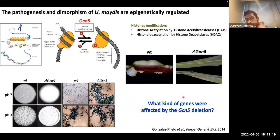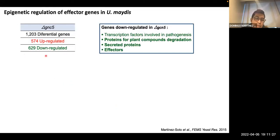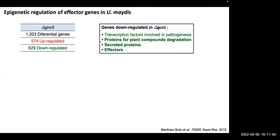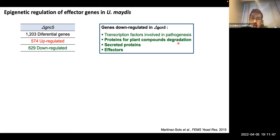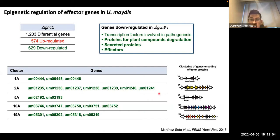The question is: what kind of genes are affected by the GCN5 deletion? To answer this, we made a transcriptomic analysis of the mutant compared to the wild type, and we identified genes involved in encoding transcription factors important for pathogenesis, genes encoding proteins involved in plant compound degradation, and genes encoding secreted proteins such as effector proteins — all of these kinds of genes are downregulated in the mutant. These effector genes are located in clusters of pathogenesis in the Ustilago maydis genome, and all of them are downregulated in the mutant.